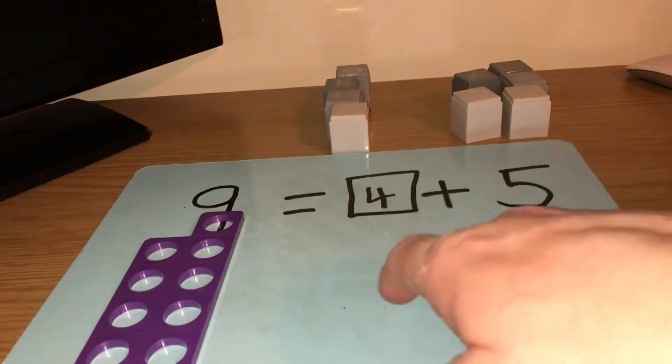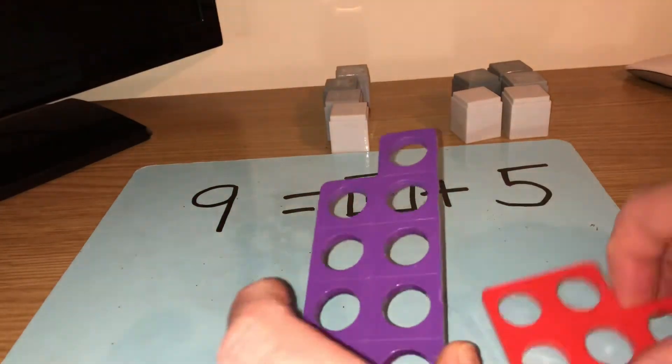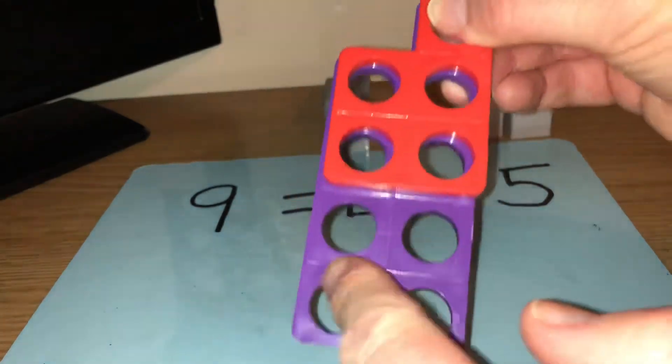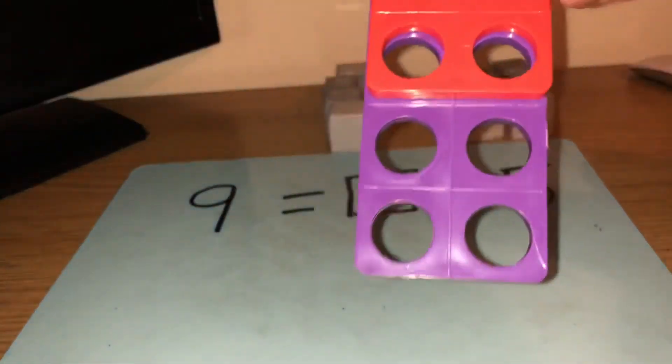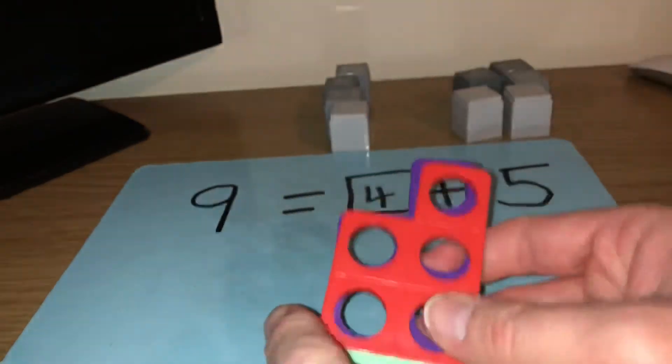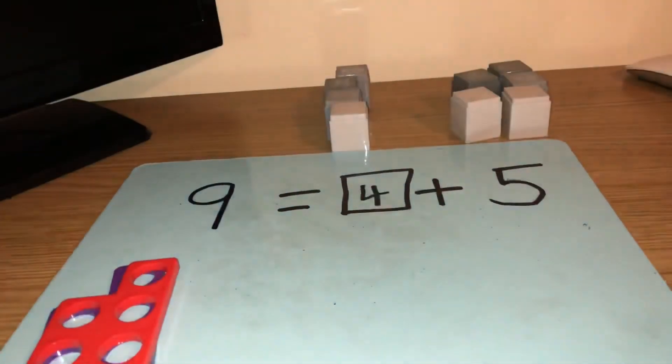So we knew that we had 5 and we had to find out what else went with 5 to make 9. So if I put that over the top, the missing part was number 4. So it's another way really of showing that 4 and 5 makes 9.